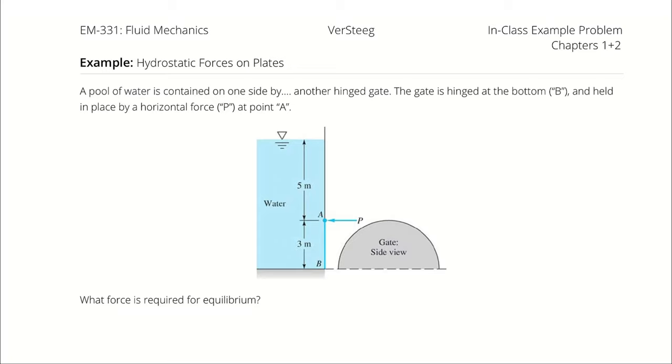A pool of water is contained on one side by a hinged gate. The gate is hinged at the bottom, which we're calling B, and held in place by a horizontal force at point A. That force is indicated as P in our diagram. What force would be required for equilibrium? By that I mean, how much does P have to be to overcome the force of water?